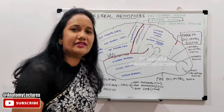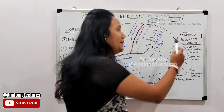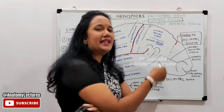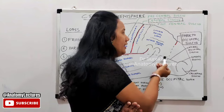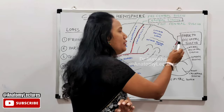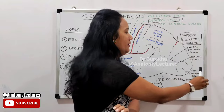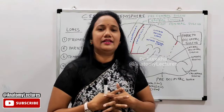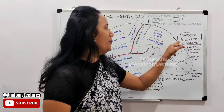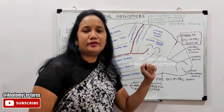The parieto-occipital sulcus actually begins on the medial surface of the cerebral hemisphere, starting at the midpoint of the calcarine sulcus. It then ascends upward and backward, turning to cut through the superolateral surface — so only a part of it is visible on the superolateral surface. It is located approximately 5 centimeters from the posterior pole.